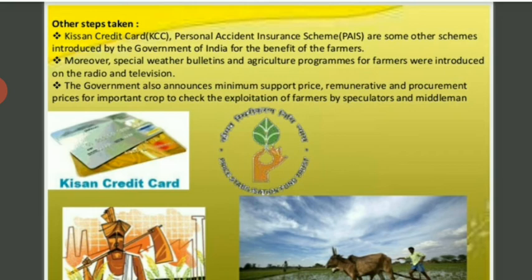Provisions for crop insurance against drought, flood, cyclone, fire and disease were introduced. Under certain adverse conditions, crop insurance is provided by the government. Grameen banks and cooperative societies are among the many schemes developed by the government for farmers.